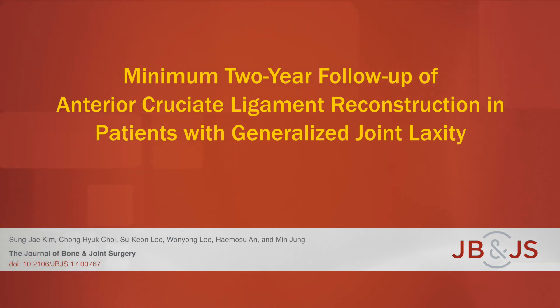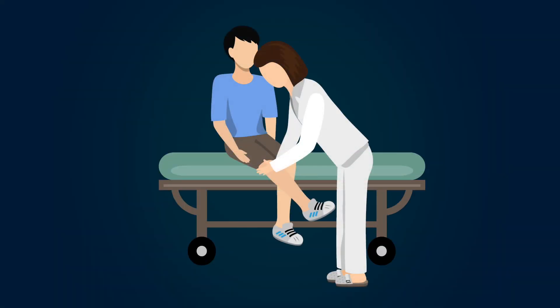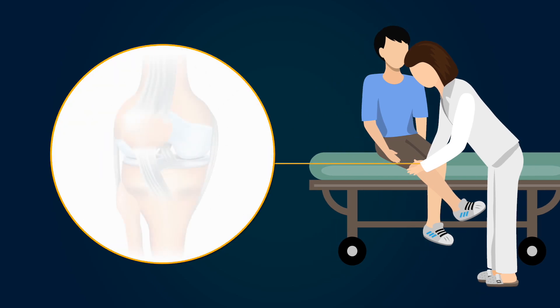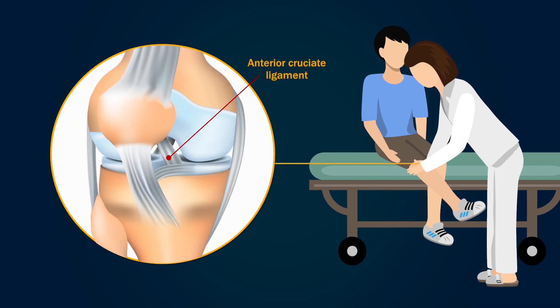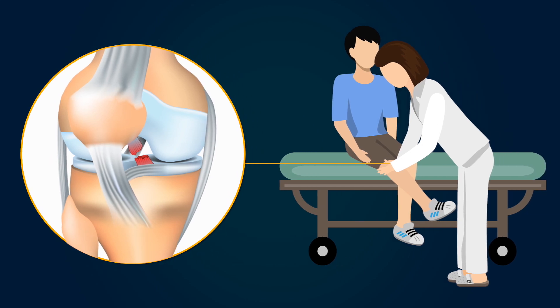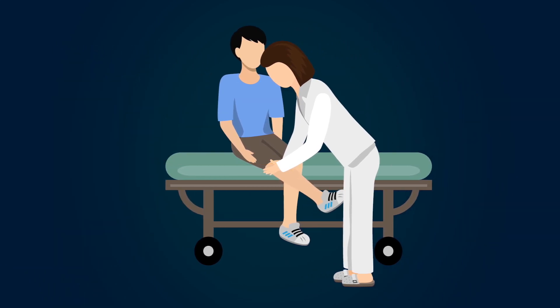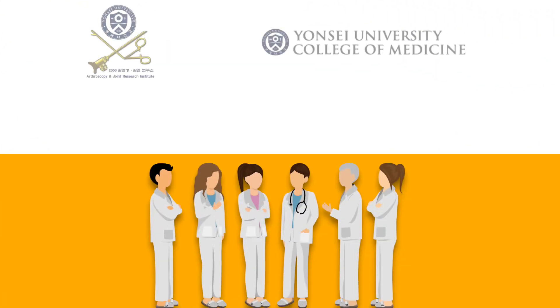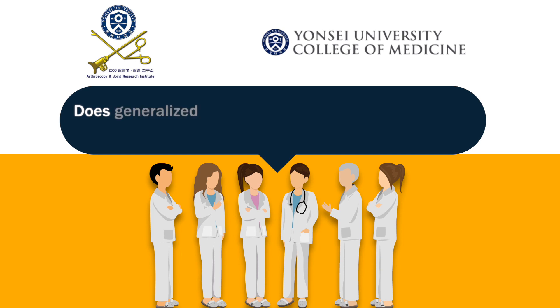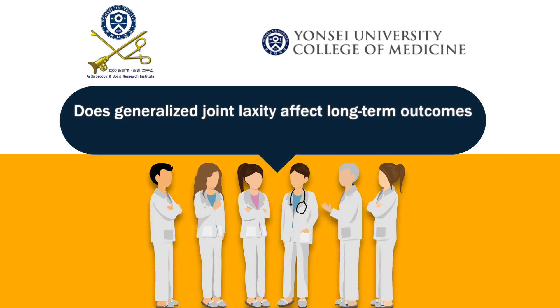This is an audio-visual representation of a study published in the Journal of Bone and Joint Surgery in 2018. There are various reasons for poor outcomes following anterior cruciate ligament or ACL reconstructive surgery. Often overlooked is the inherent physiological laxity of the patient's joints. Orthopedic researchers in South Korea wanted to answer the question: does generalized joint laxity affect long-term outcomes following ACL reconstruction?